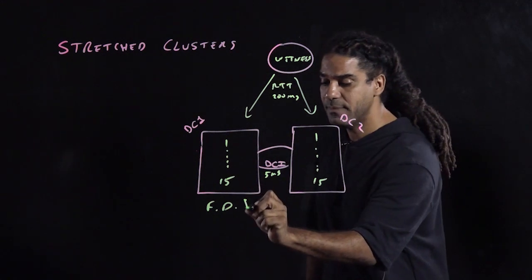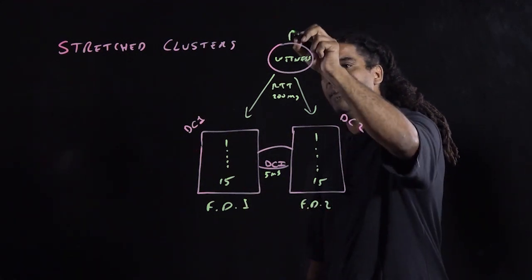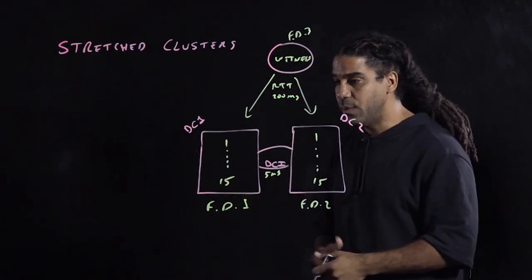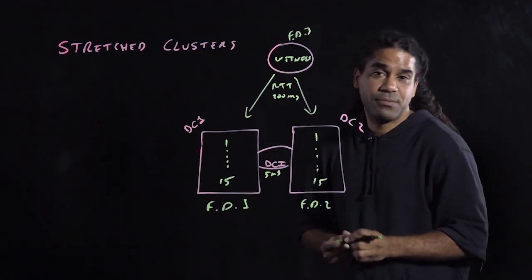So you will have fault domain number one, fault domain number two, and you will have fault domain number three, which is the witness. So we have our stretch cluster configured. So what's next? We need to have a VM.